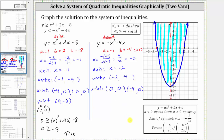For this function, if we set x equal to zero to find the y-intercept, notice that when x is zero, y is also zero — so the origin is both an x-intercept and a y-intercept. Let's plot the vertex at negative two comma four and the two x-intercepts at negative four comma zero and zero comma zero to graph the second parabola. Remember, this time it is going to be dashed.